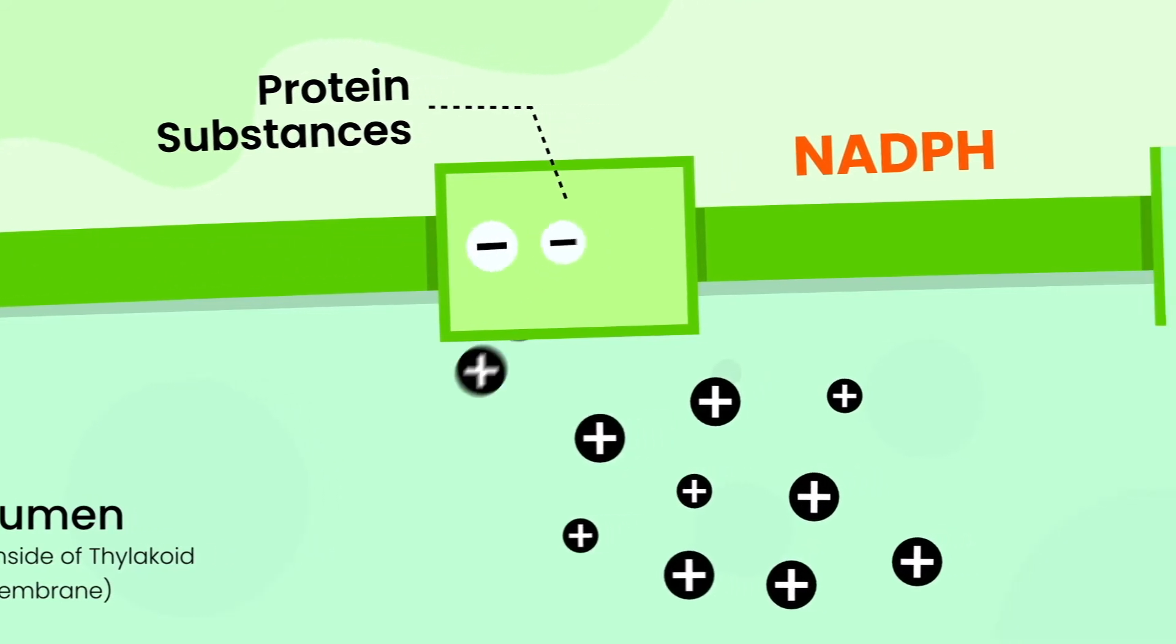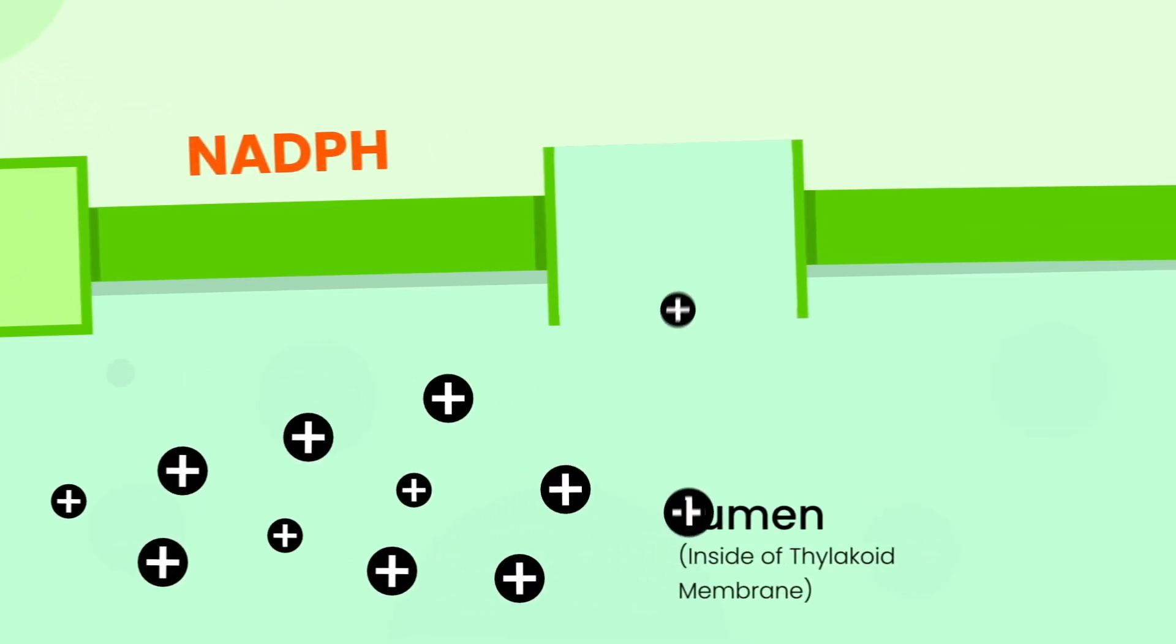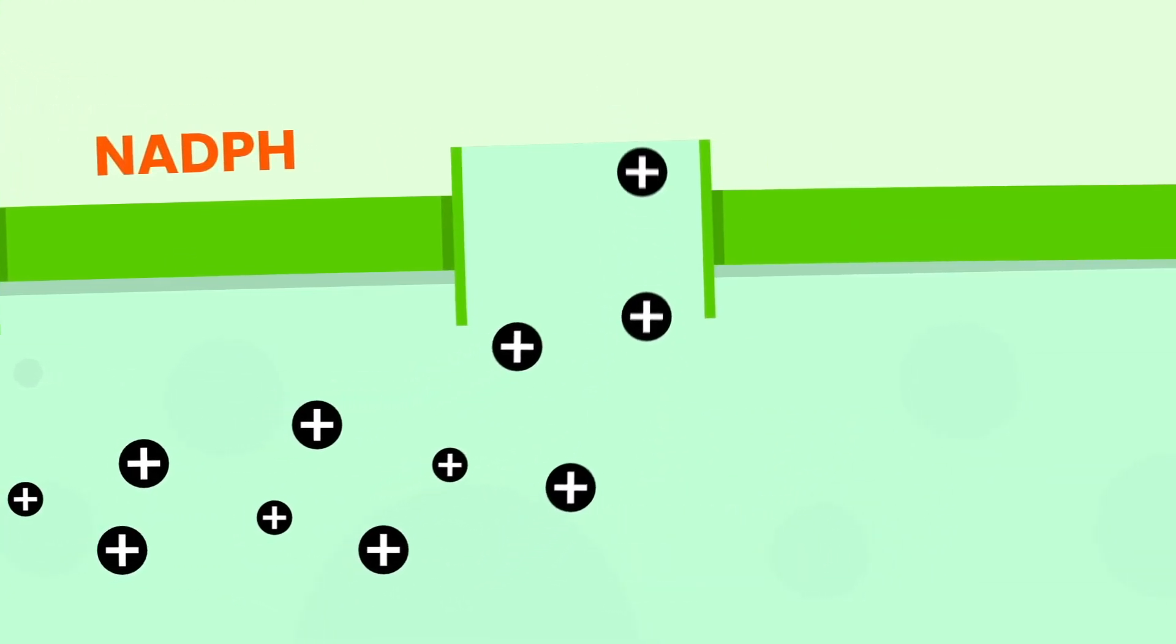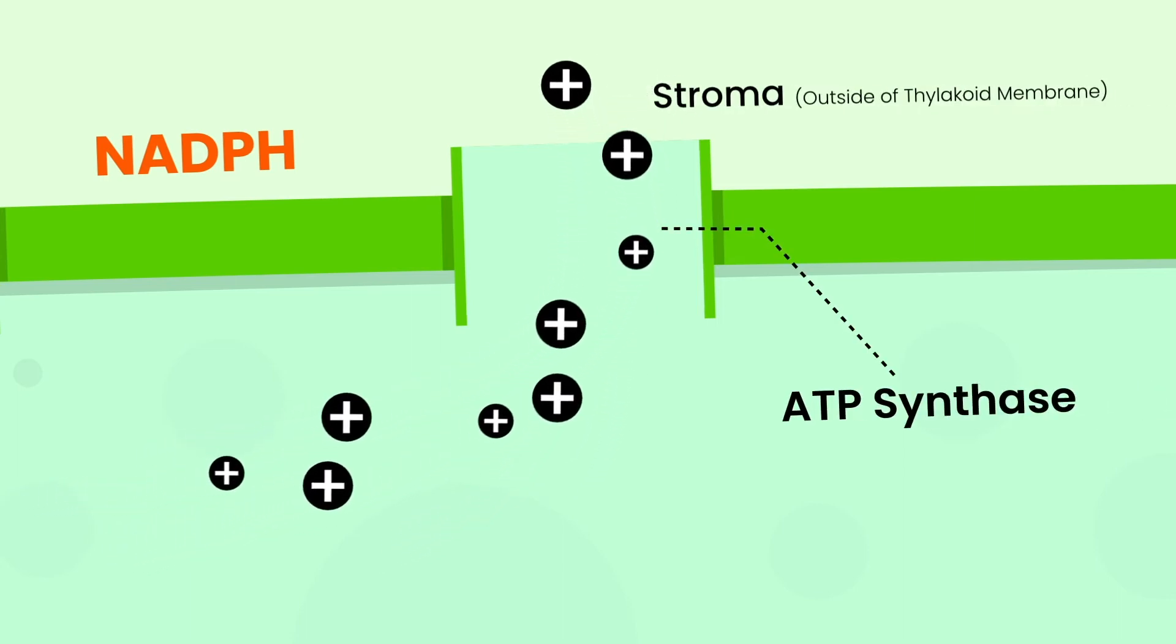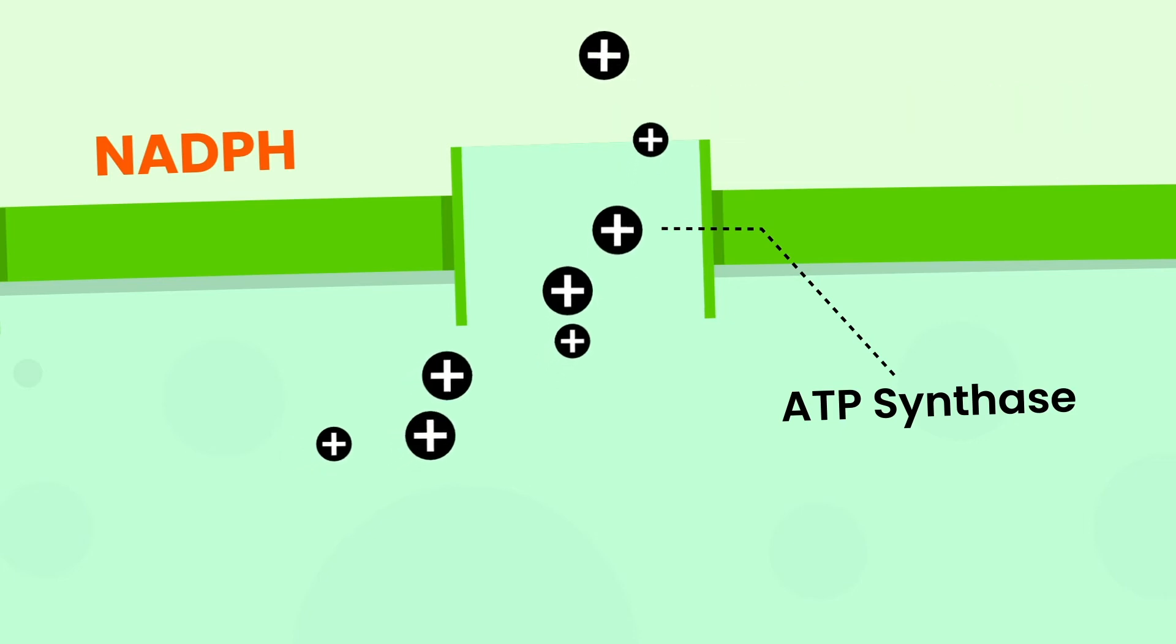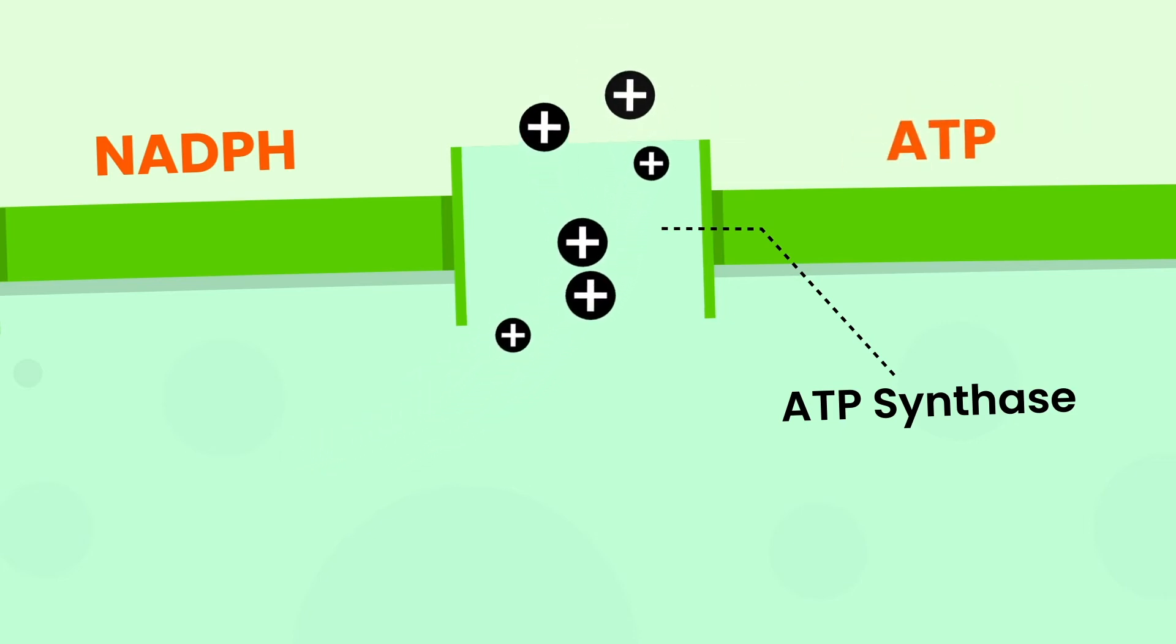So now, the newly released protons travel from lumen, which is the inside of thylakoid membrane, through a protein called ATP synthase to reach stroma, which is outside the thylakoid membrane. The ATP synthase produces one ATP molecule for each proton passing through it.